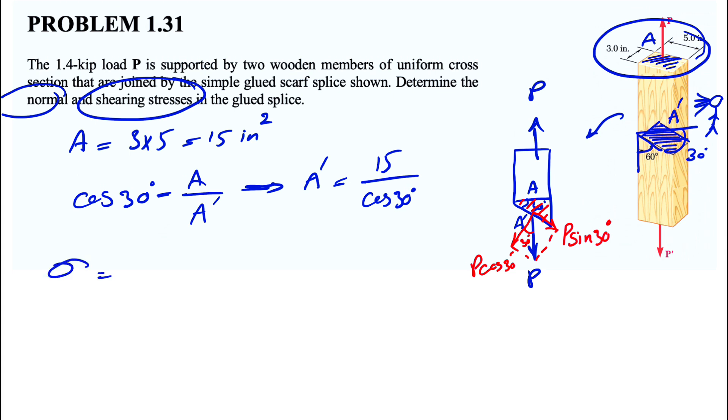Let's start with the normal stress. That's going to be the normal force to the surface that we have in here. So we can see that the normal force is P cosine of 30 degrees over the area, which is 15 over cosine of 30 degrees. So this will be equal to P times cosine of 30 times cosine of 30 or cosine squared of 30.